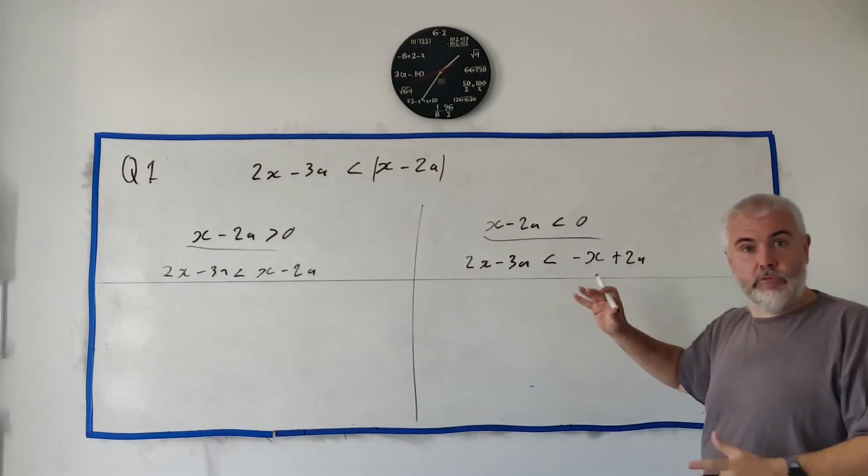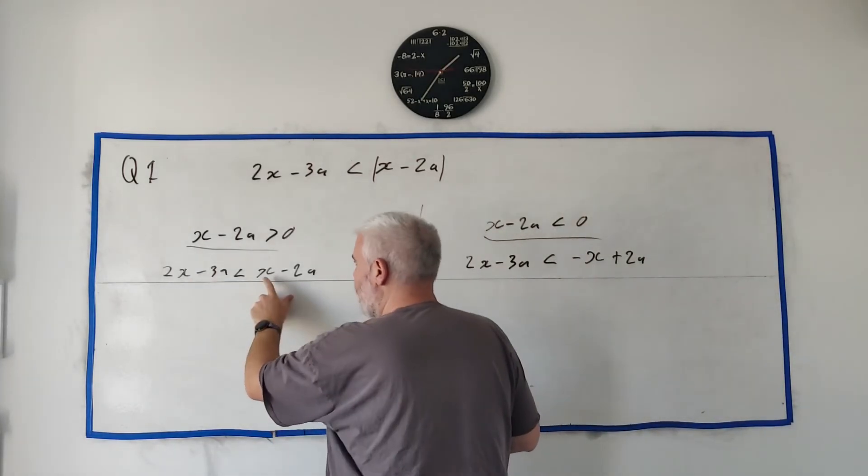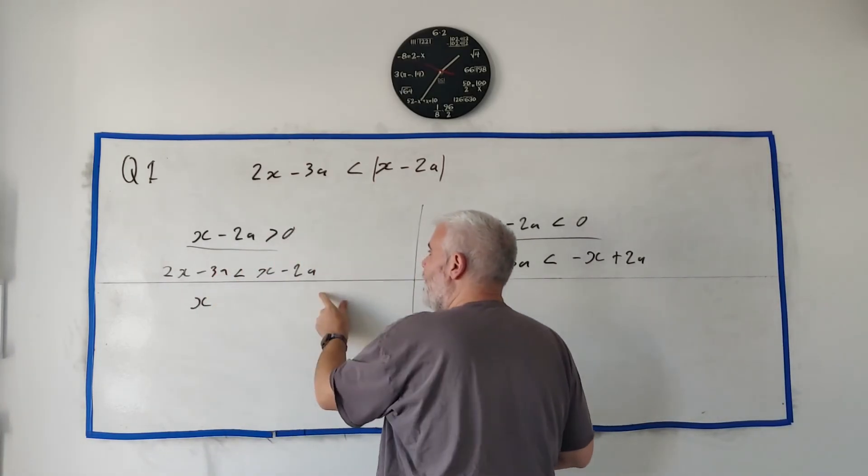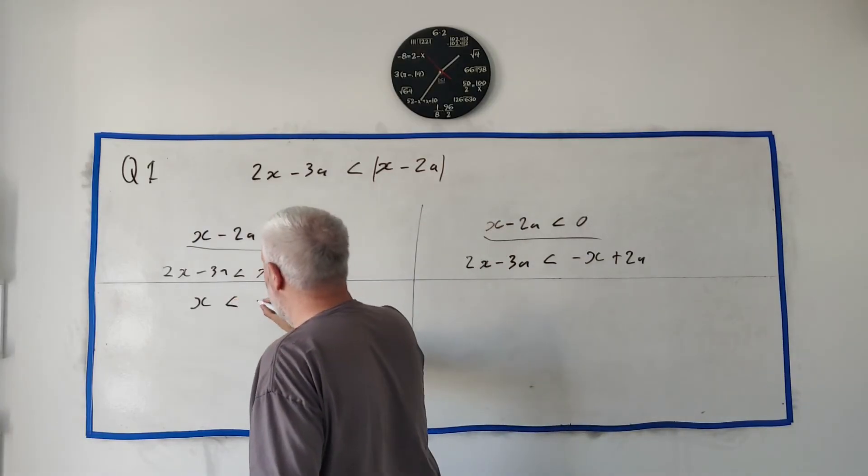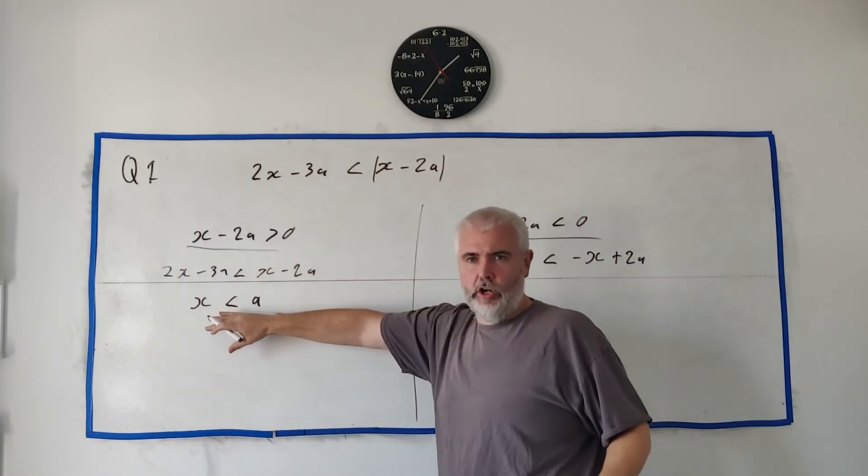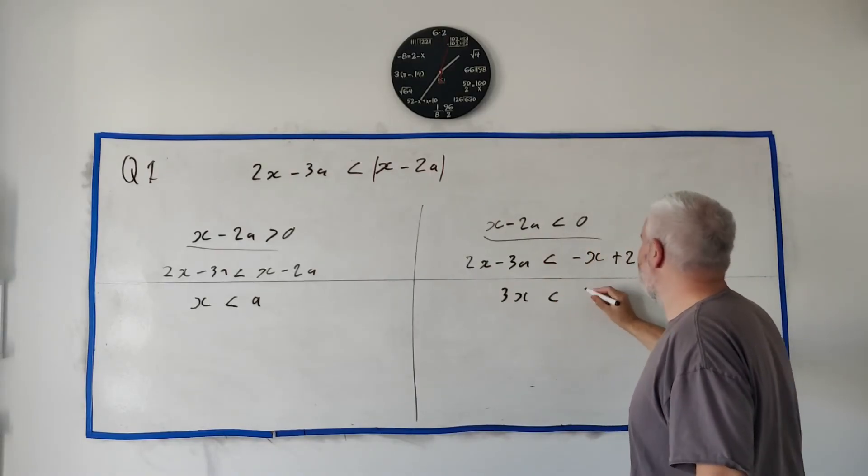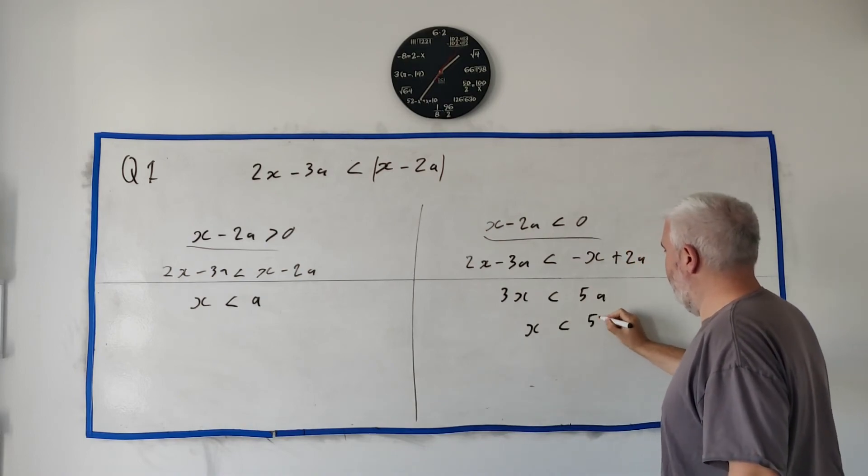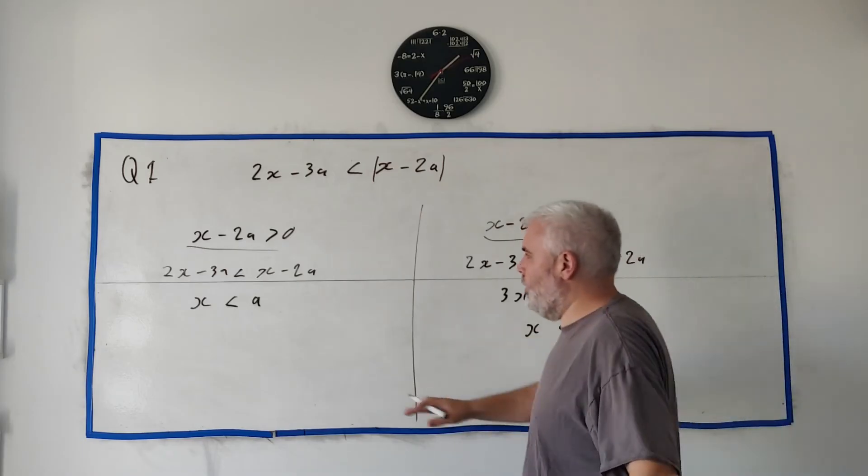Writing this again, we would get 2x minus 3a is less than, well instead of this we'd have minus x and plus 2a. Because the absolute value would have just changed the sign because we were in this less than 0 world. Okay, now solving both of these is relatively straightforward. We just move things over to equals. This x comes over, we get x here. The 3a comes over and we get minus 2a plus 3a. So x is less than a. I'll talk about that in a moment. And solving this side we'd get 3x is less than 5a. And that'd be x is less than 5 over 3a.